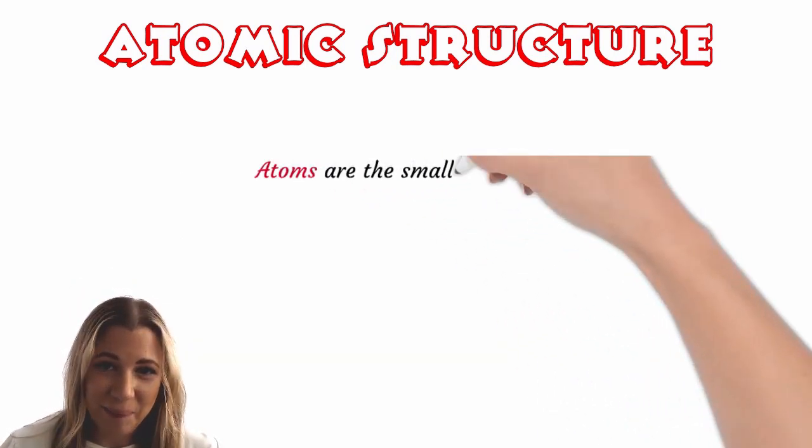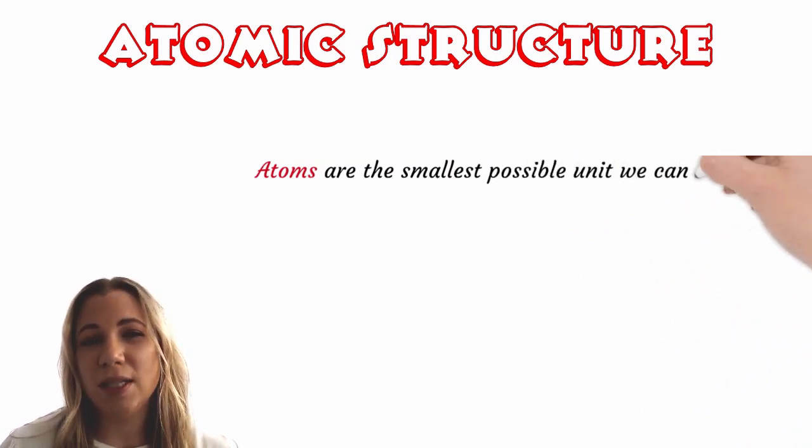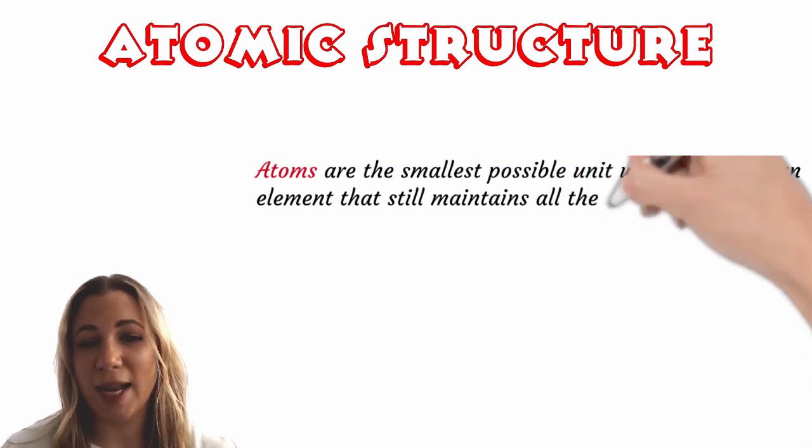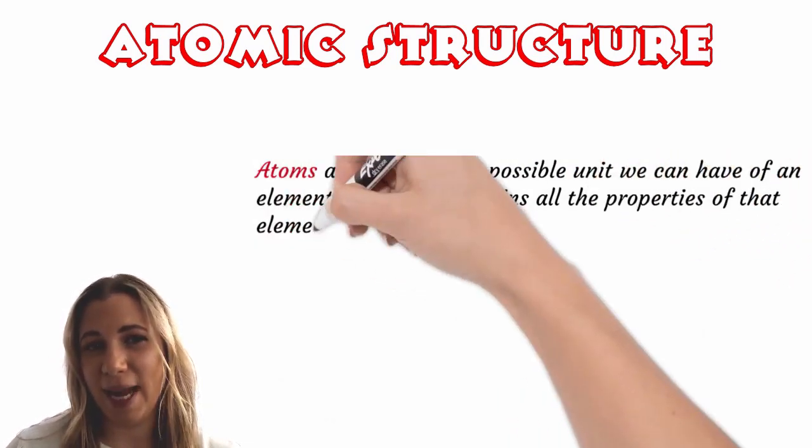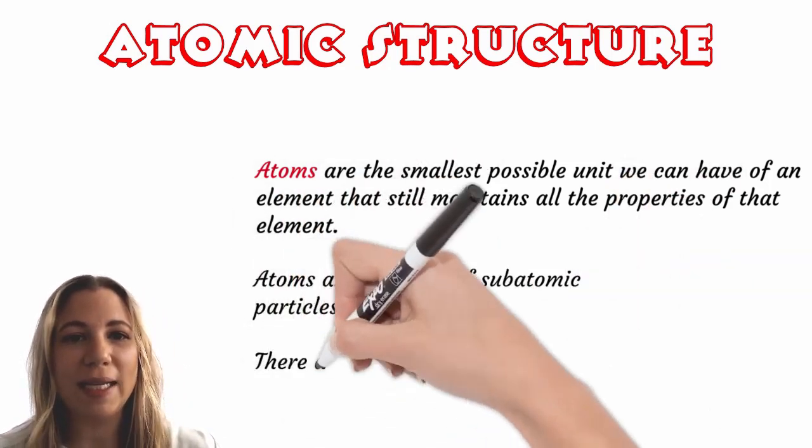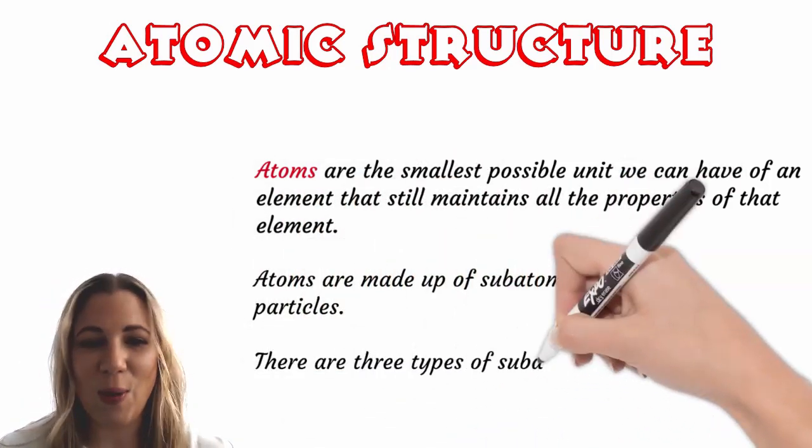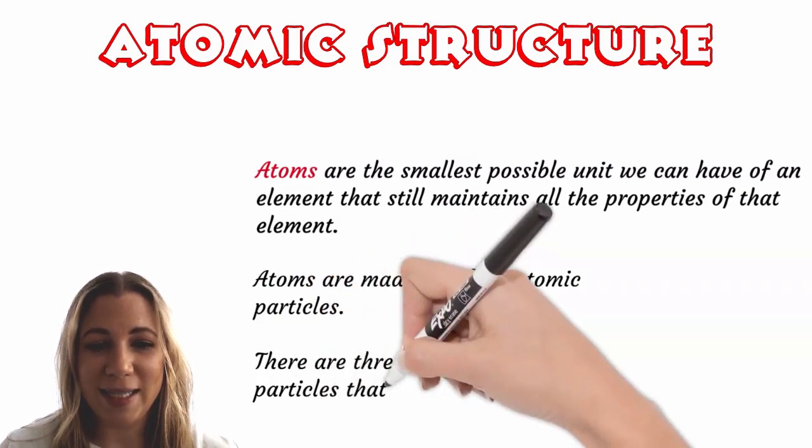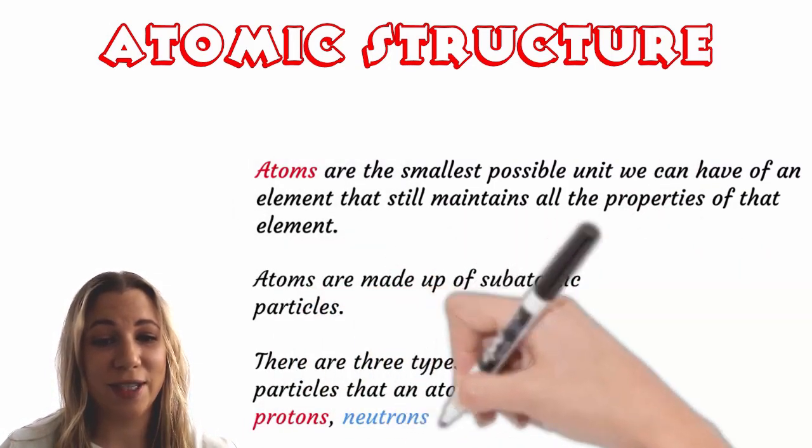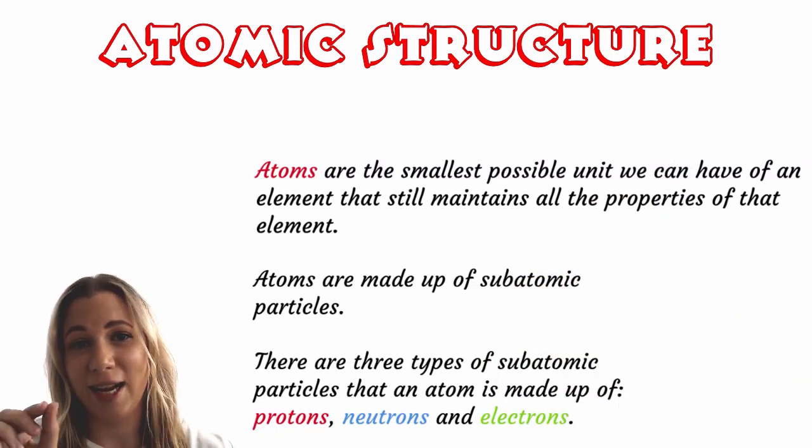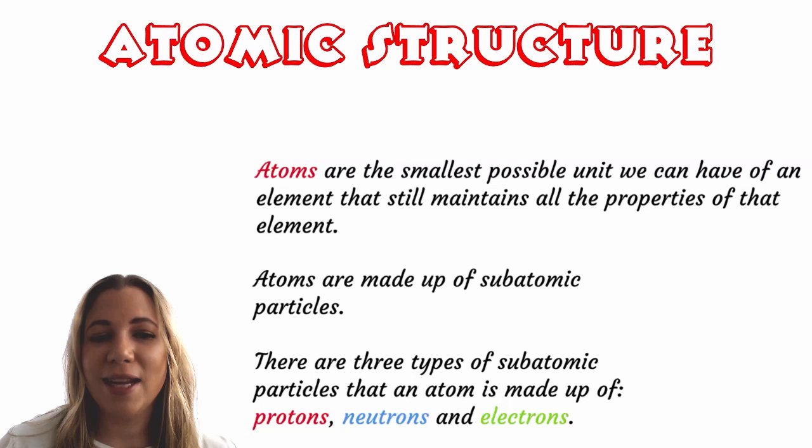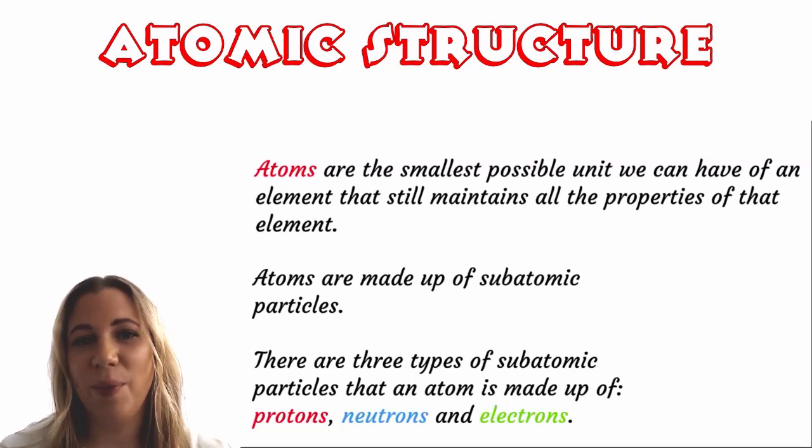Now an atom is the smallest possible unit of an element that we can have that still maintains all of the properties of that element. And when we say smallest we mean like teeny tiny, so like 0.0000000002 meters in diameter, teeny tiny. Everything in the whole universe is made up of atoms.